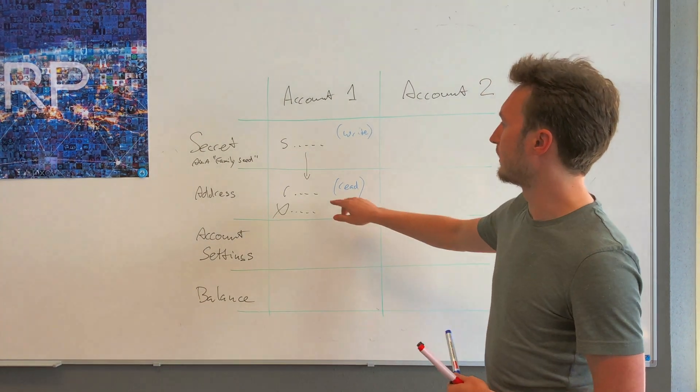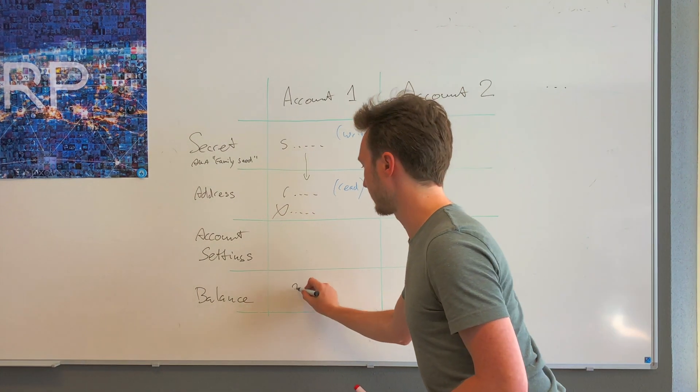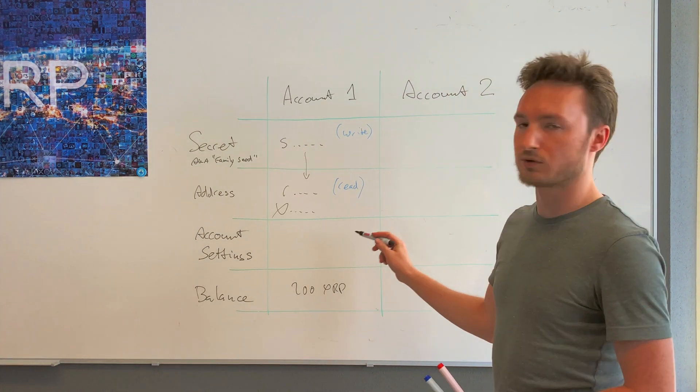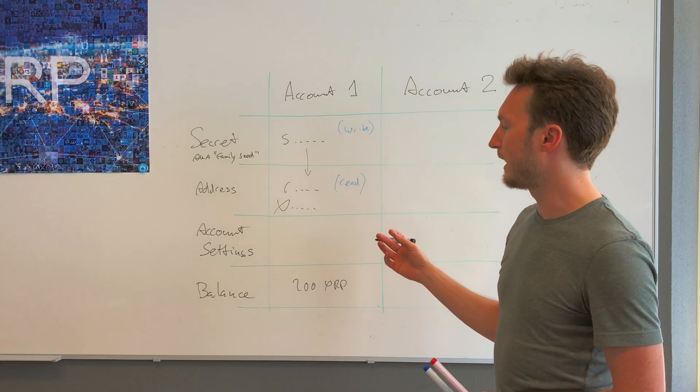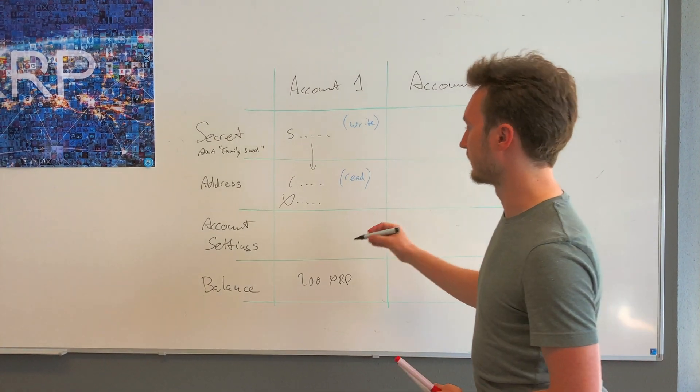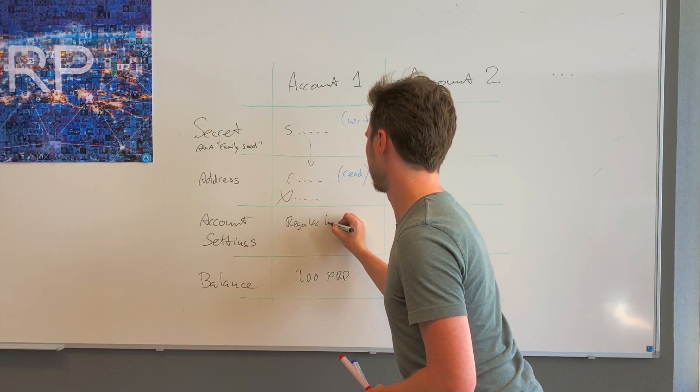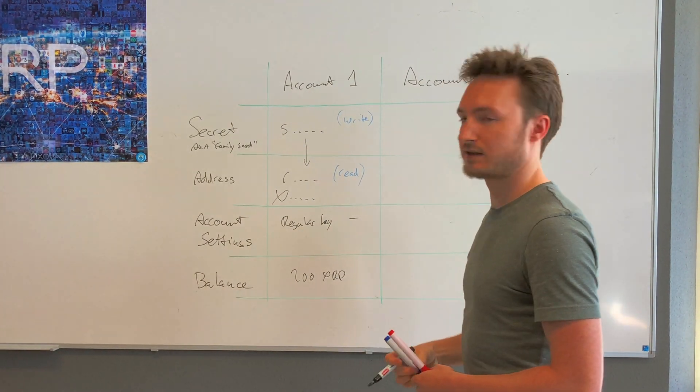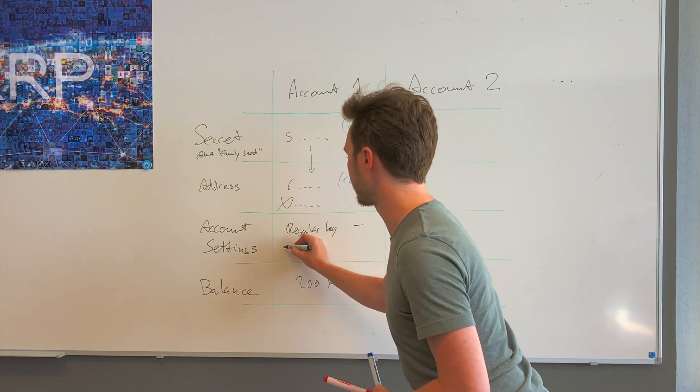If you look at an account on the XRP ledger, an account may have a balance like 200 XRP, but an account also contains certain settings. The XRP ledger stores settings for your account, and account settings contain a regular key field. By default, that's empty.